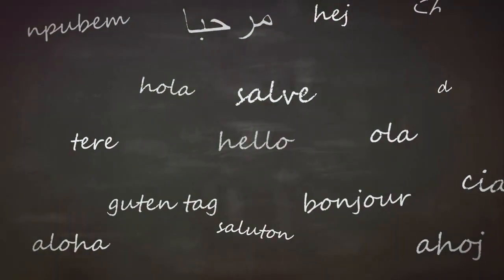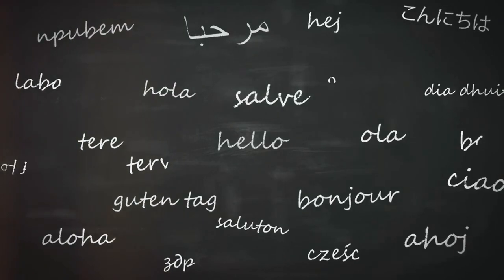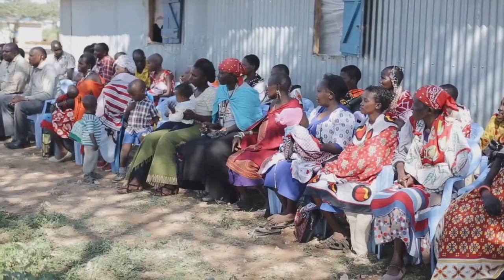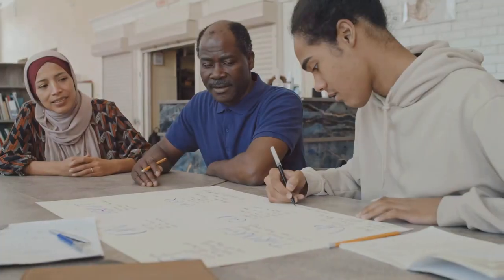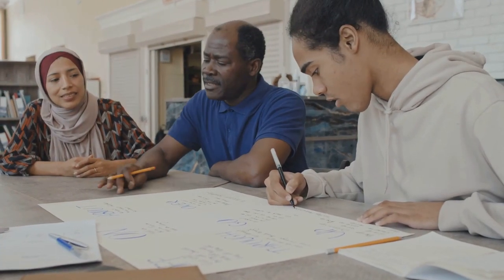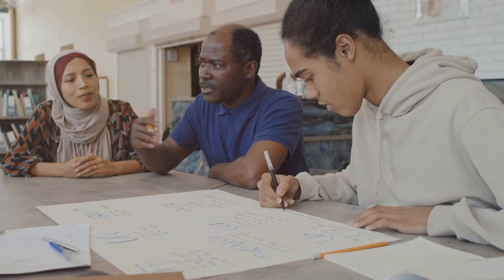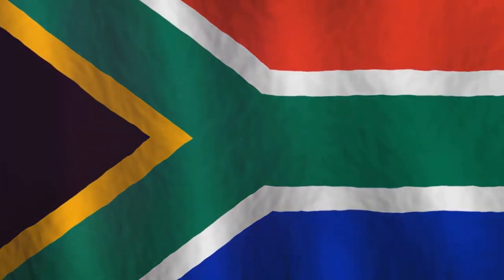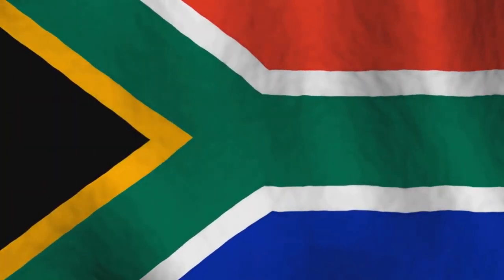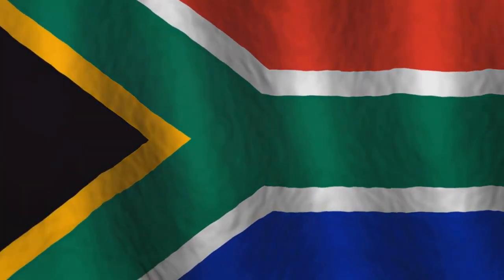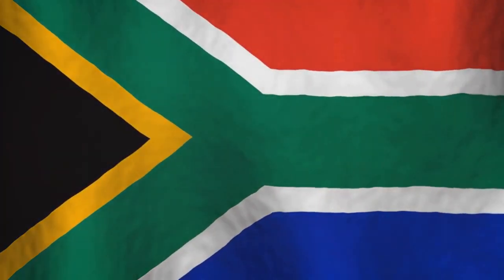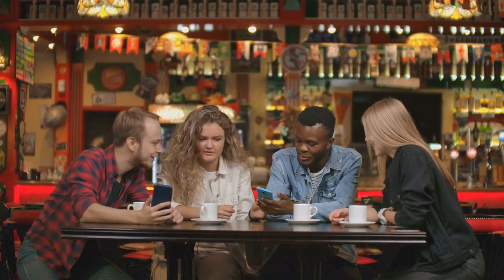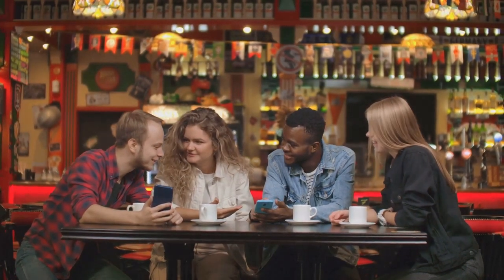The Khoisan languages, spoken by the indigenous Khoi and San people of Southern Africa, are renowned for their complex click consonants and rich phonetic diversity. They are unlike any other languages in the world, which has led some linguists to categorize them as a unique language family. However, this classification is not without controversy. Some linguists argue that the similarities between Khoisan languages are superficial at best and do not necessarily indicate a shared ancestry. They believe that these similarities could be the result of language contact and convergence, rather than common descent.